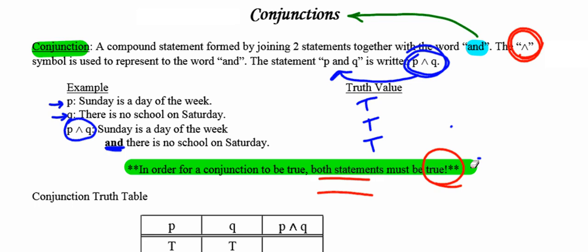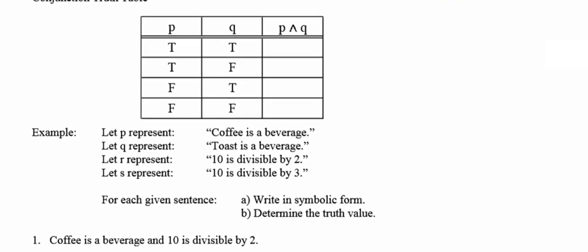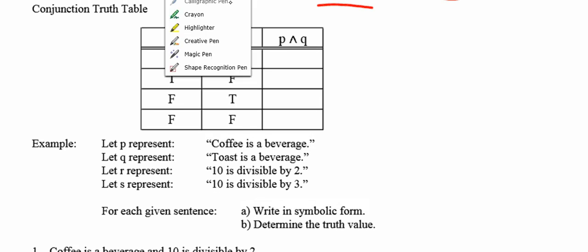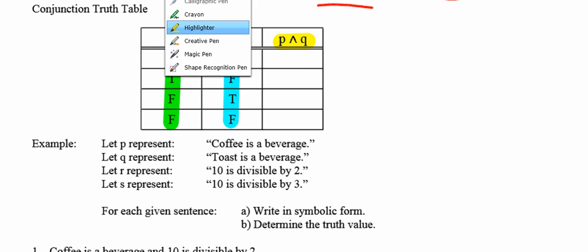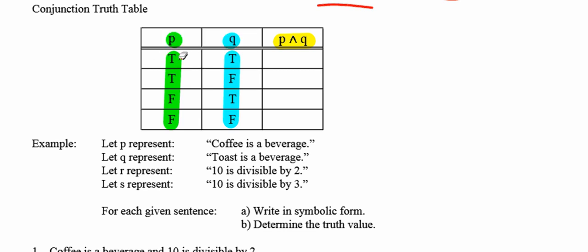Let's look at the truth table for conjunction. A truth table is a visualization of all possible truth values for a statement. The first column represents all truth values for P, the second for Q, and we determine all possible truth values for P and Q. In the first line, both P and Q are true — and since the conjunction is true only when both statements are true, the conjunction is also true.